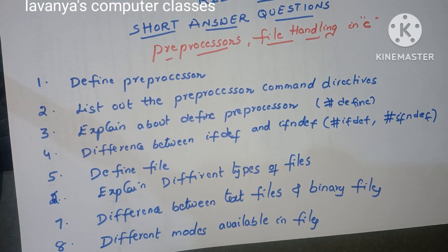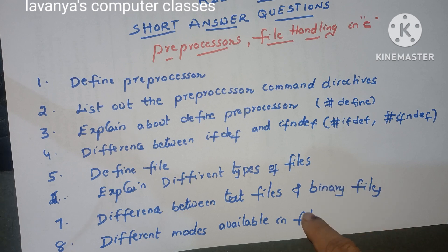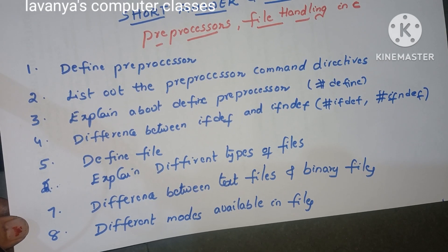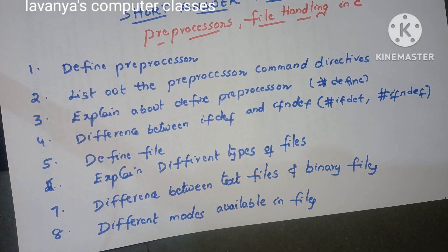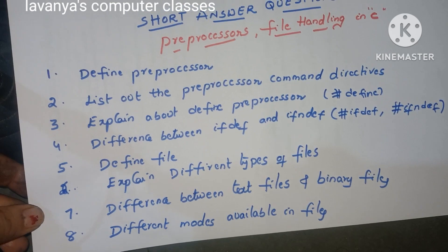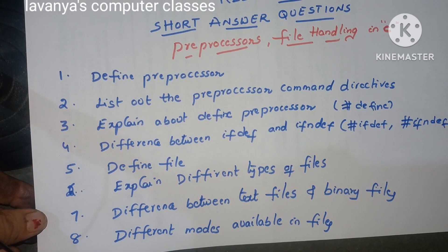Sometimes they ask individually, or they ask explain about hash define. Hash is the symbol for preprocessor directives. They may ask explain about hash define preprocessor, or directly explain about any specific preprocessor. Or the next one is the difference between hash ifdef and hash ifndef preprocessor directives. These are the questions on preprocessors.